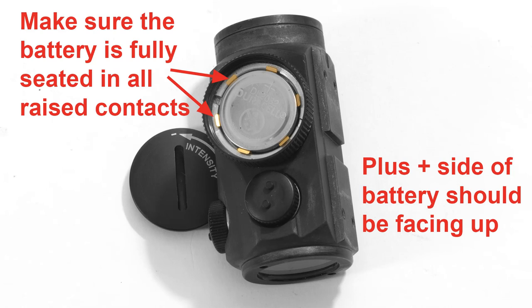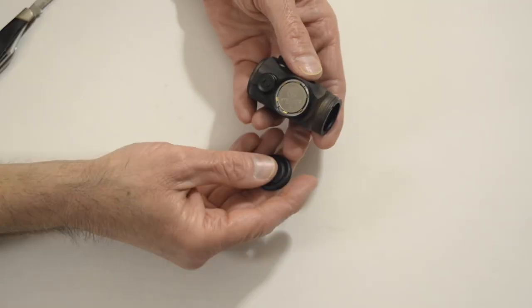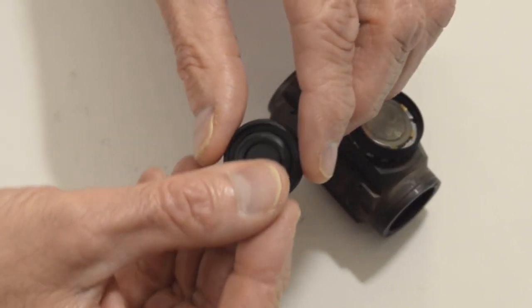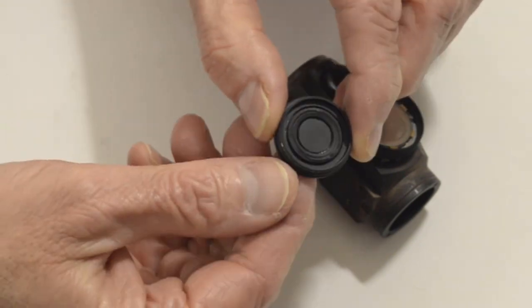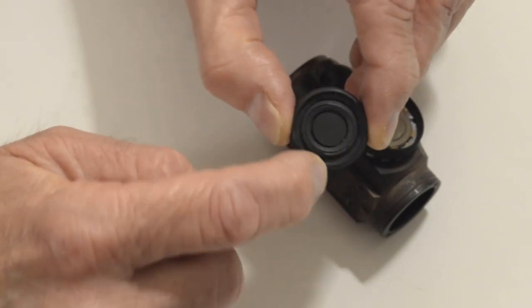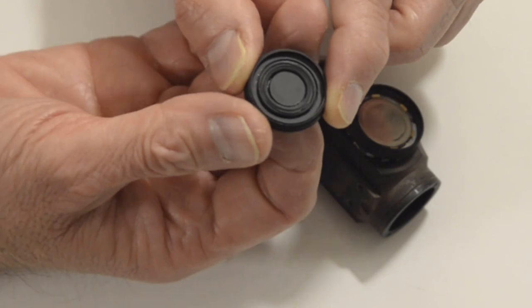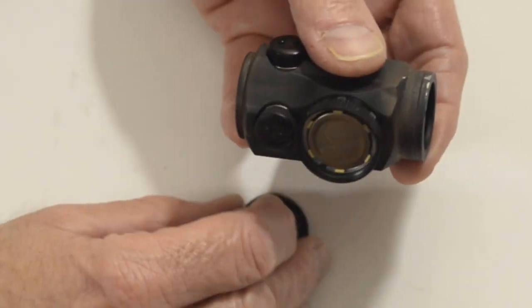Make sure that the contacts look even all the way across on your battery cover. Make sure that rubber gasket is still there. If you don't have this rubber gasket, contact Aimpoint and see if you can get a replacement.